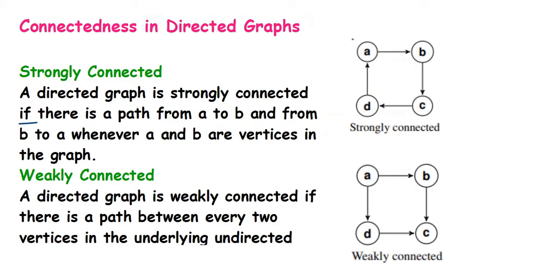Now let's see how it works in directed graphs. For connectedness in directed graphs, we have two types: strongly connected and weakly connected.